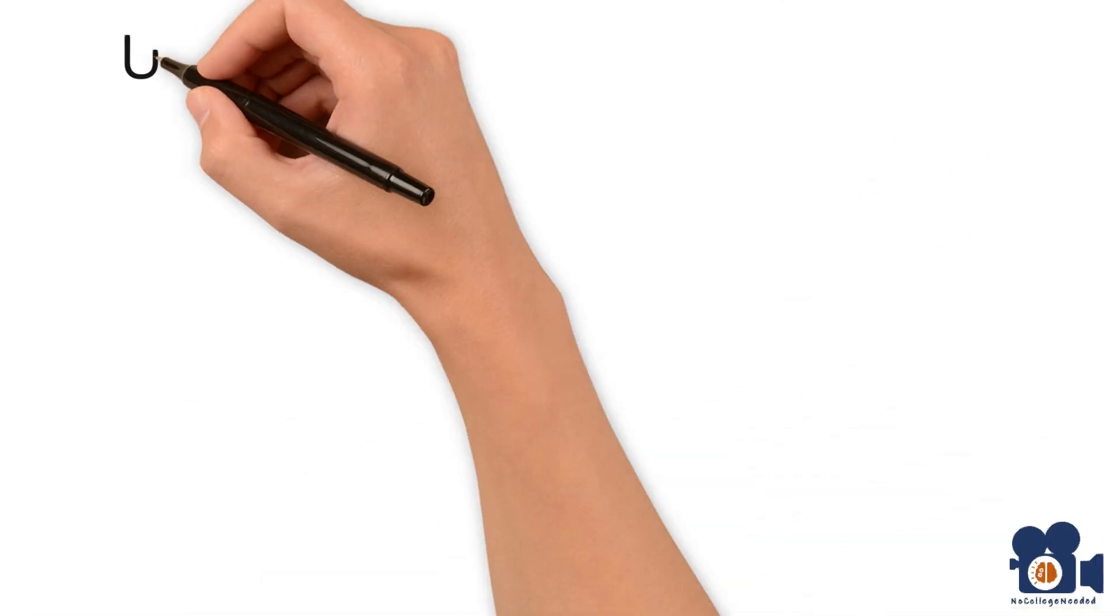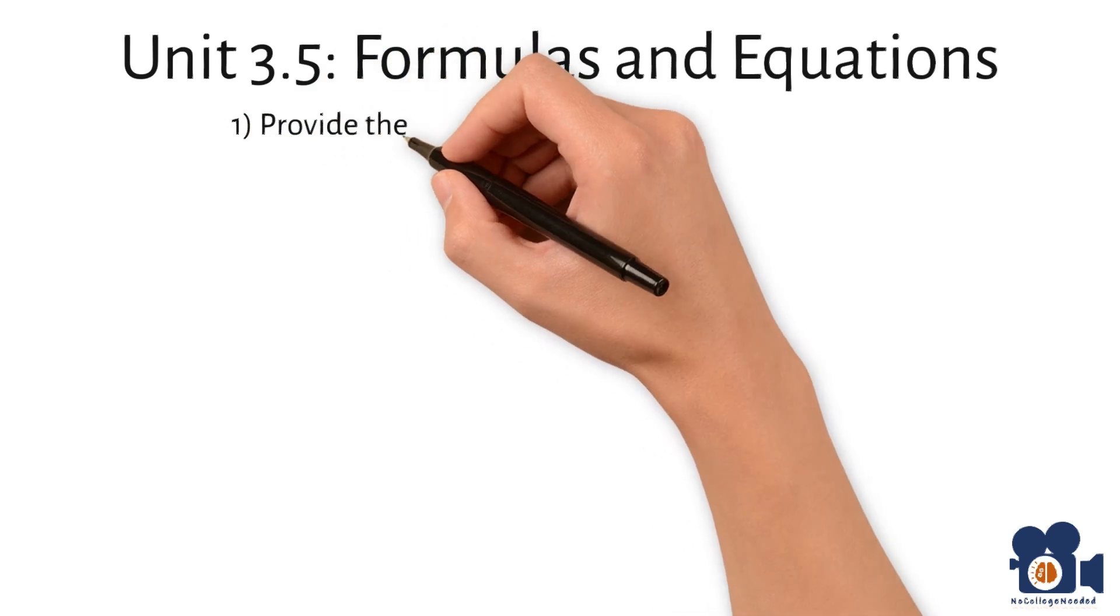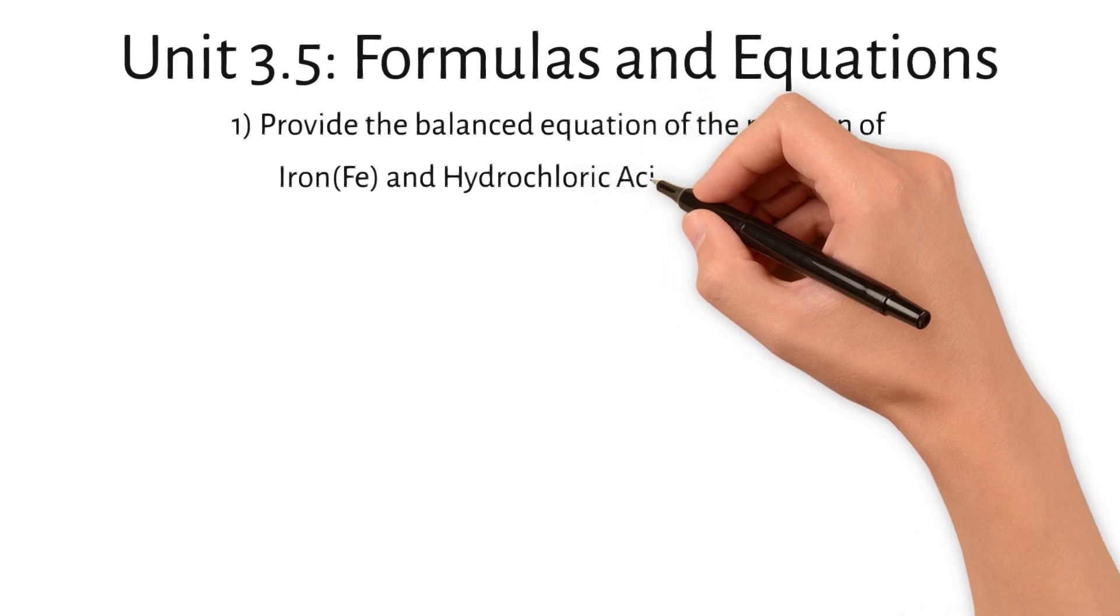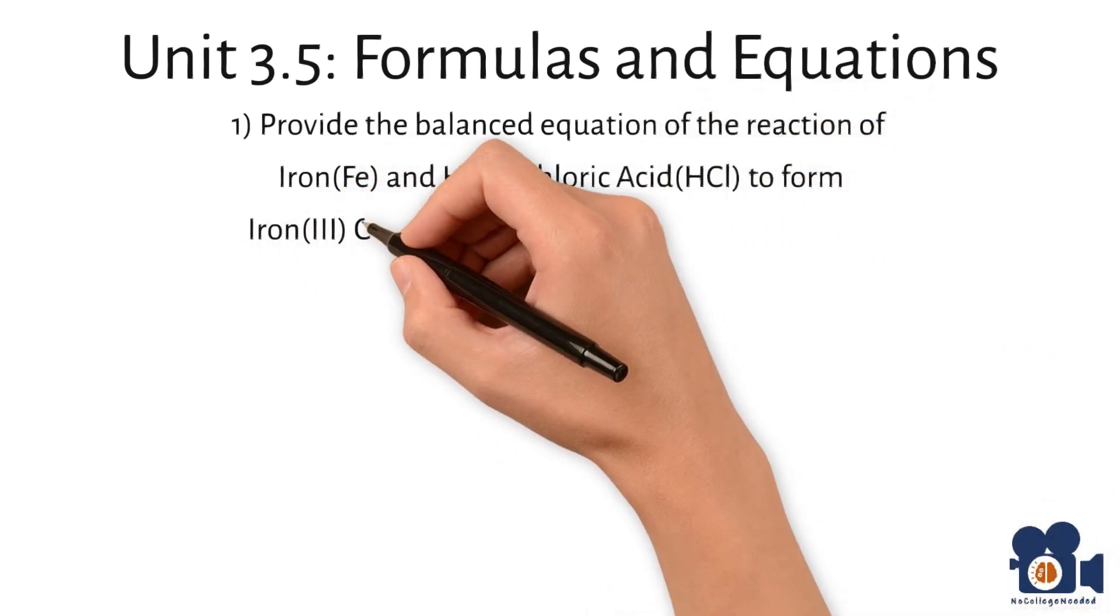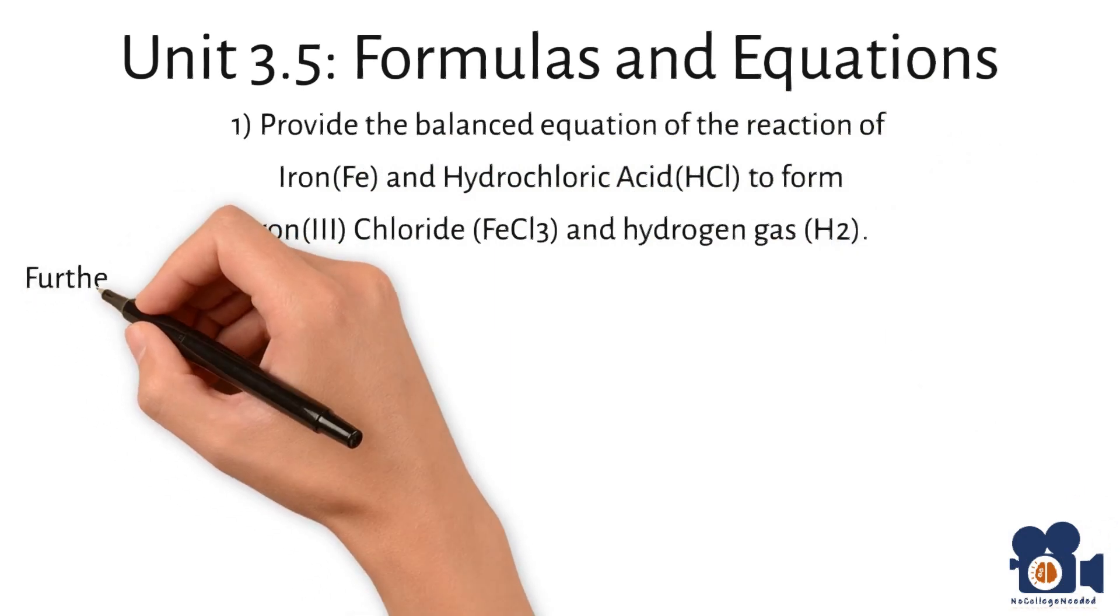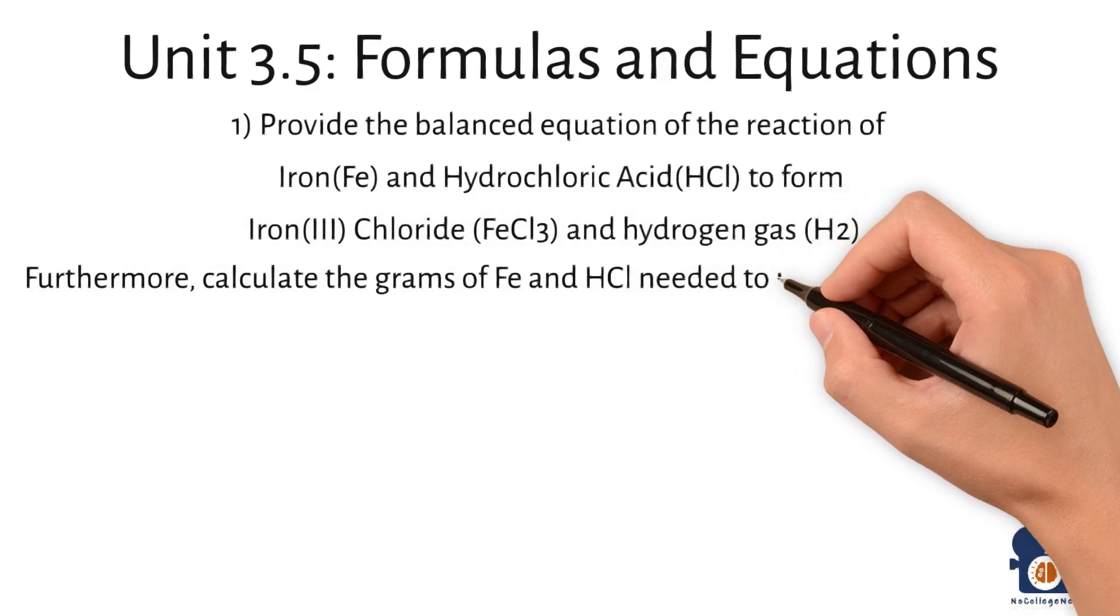Unit 3.5, Formulas and Equations. Provide the balanced equation of the reaction of iron Fe and hydrochloric acid HCl to form iron 3 chloride FeCl3 and hydrogen gas H2. Furthermore, calculate the grams of Fe and HCl needed to produce one pound of FeCl3.